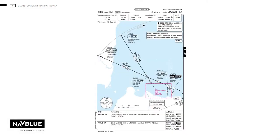The SID chart shall contain communication information and a descriptive chart with descriptive text. If official departure procedures do not have designators, then the chart shall be called departure routes. SID charts may contain several SIDs on one chart, and can be produced in either portrait or landscape.